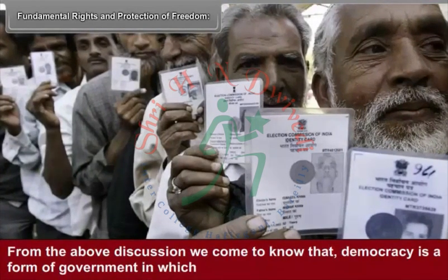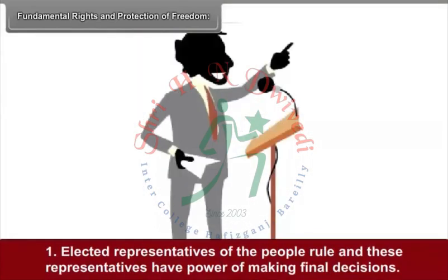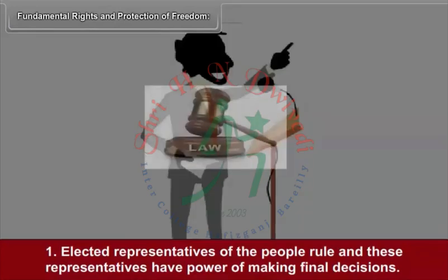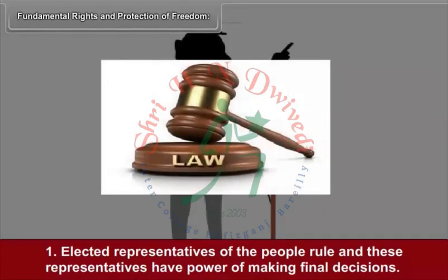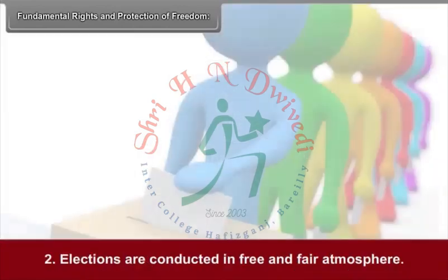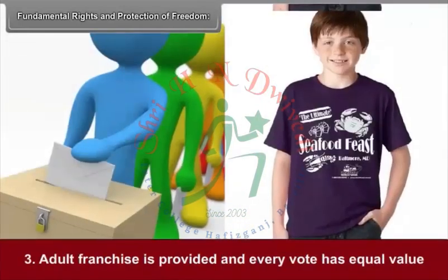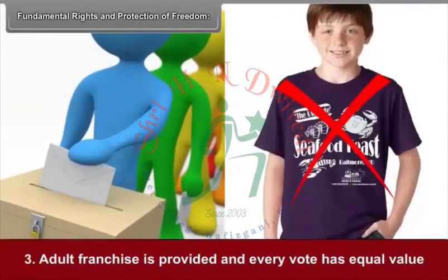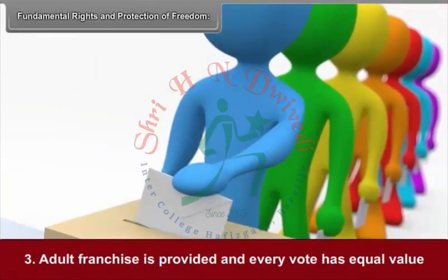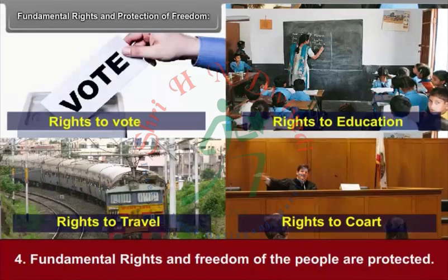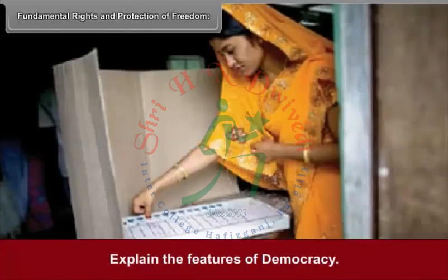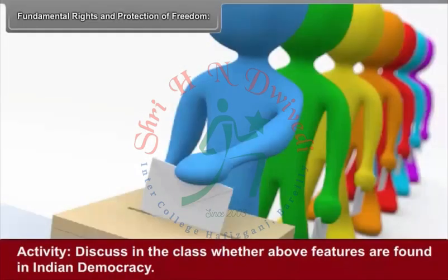From the above discussion, we come to know that democracy is a form of government in which: first, elected representatives of the people rule and these representatives have the power of making final decisions; second, elections are conducted in a free and fair atmosphere; third, adult franchise is provided and every vote has equal value; fourth, fundamental rights and freedom of the people are protected. Activity: discuss in the class whether the above features are found in Indian democracy.